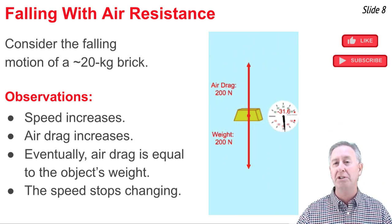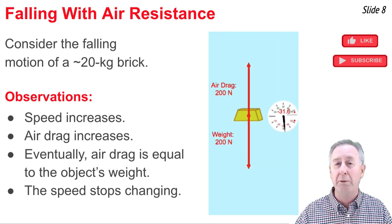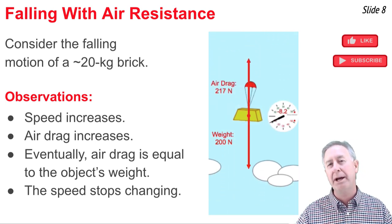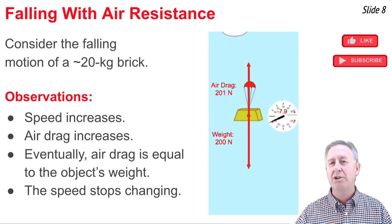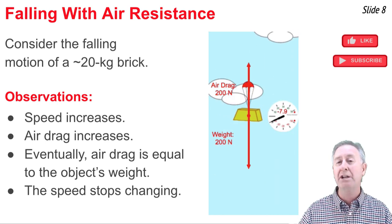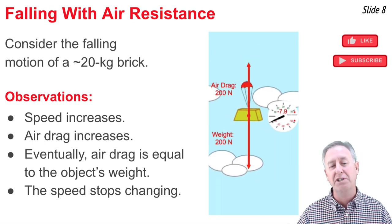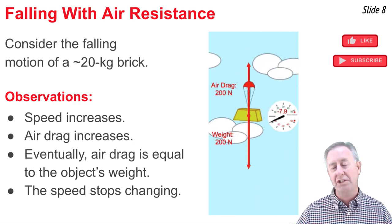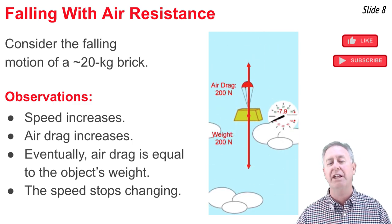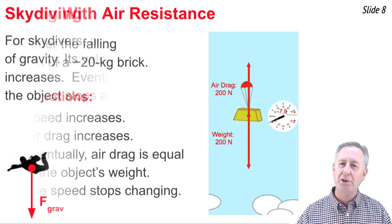This locked-in speed will continue unless we change another variable, like the cross-sectional area of the drag coefficient, by opening a parachute. So the observations are that the speed increases, the air resistance increases, until finally the upward force of air resistance equals the downward force of gravity. And at that point, the speed stops changing.